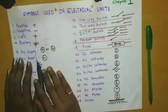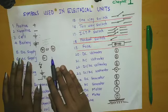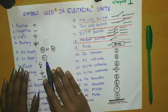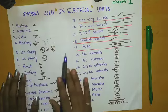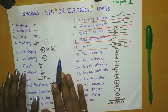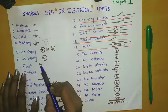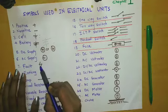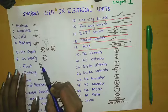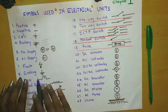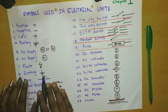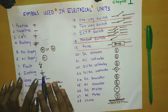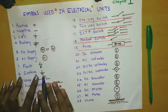In AC supply we use a sine wave because it's alternating. Wherever there is a fault in our circuit then we denote it by the earthing symbol. We all know we have to do earthing, and this is the symbol for earthing.